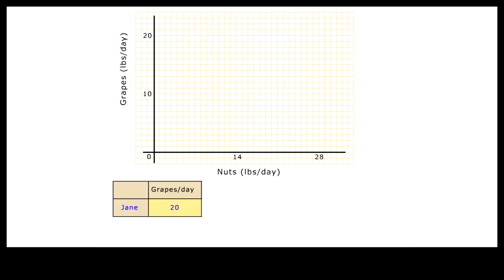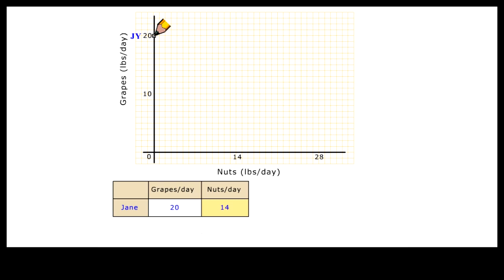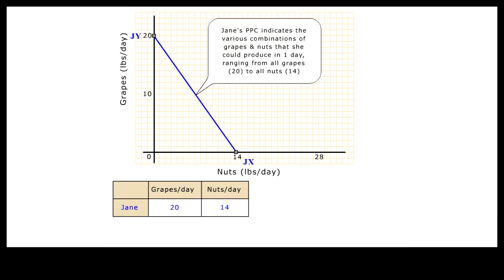In a simple two-goods economy, where only grapes and nuts are produced, we can represent the production function with a two-dimensional diagram, with grapes on the vertical axis and nuts on the horizontal axis. In this economy, we have two workers. One of them, Jane, can produce a maximum of 20 pounds of grapes per day or 14 pounds of nuts per day. The linear production function can be represented by a straight line through the vertical intercept 20 and the horizontal intercept 14.